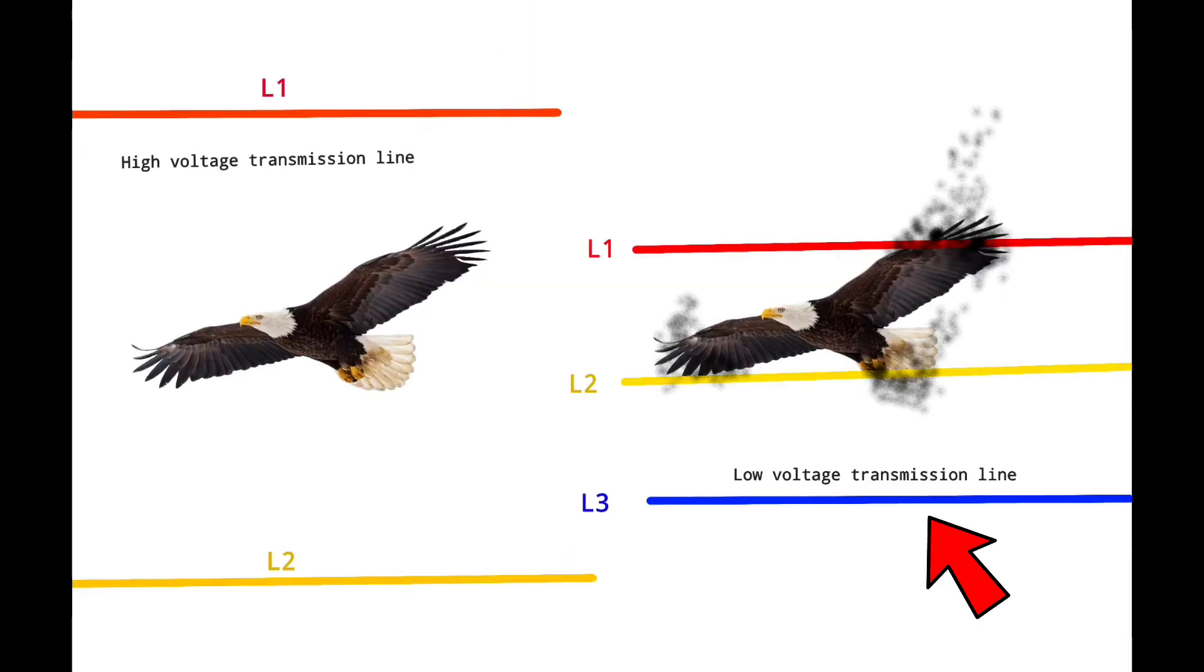Look at this picture. In low voltage transmission line, the bird becomes electrocuted and burnt. As in low voltage transmission line, the gap between the phases is small, and in HV, the gap between the phases is big.